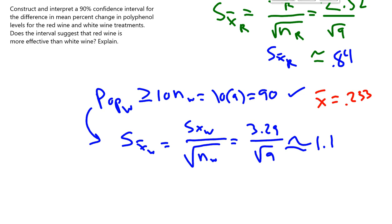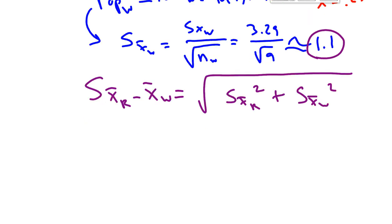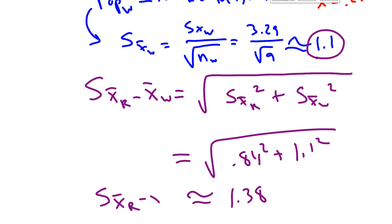Now what's sort of frustrating is that neither one of these standard deviations is the standard deviation we really care about when we're doing a two-sample T interval. We actually want the standard deviation of X bar red wine drinkers minus X bar white wine drinkers. And we know we're not allowed to add standard deviations. We're not allowed to subtract standard deviations. The only thing we can do is add variances. So this is going to equal the sum of S of X bar red wine drinkers squared plus S of X bar white wine drinkers squared. So just remembering that when you square standard deviations, you make them into variances. So this is going to give us 0.84 squared plus 1.1 squared. If we take the time to do that, we get about 1.38. So that's our standard deviation of X bar red wine drinkers minus X bar white wine drinkers.